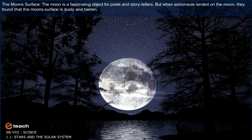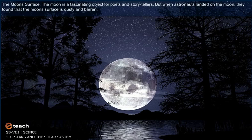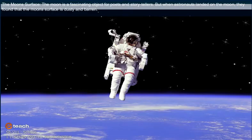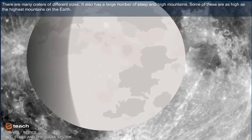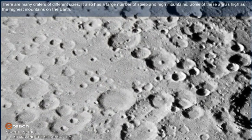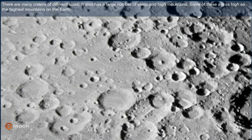The moon's surface. The moon is a fascinating object for poets and storytellers. But when astronauts landed on the moon, they found that the moon's surface is dusty and barren. There are many craters of different sizes. It also has a large number of steep and high mountains. Some of these are as high as the highest mountains on the Earth.